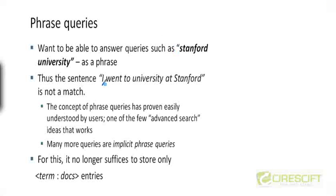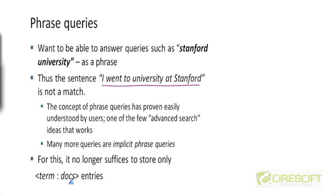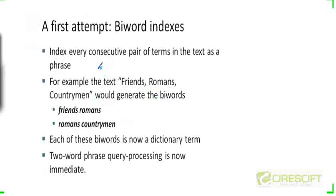If you don't keep track of positions, then even a document containing this kind of a sentence will be considered relevant. So now let's see how to augment our postings lists to incorporate not only which terms appear in which documents, but also positional information about where those terms appeared in the documents. There are actually two solutions for handling phrase queries. One of them is called the positional index, where you add information about the positions at which terms appear in documents.